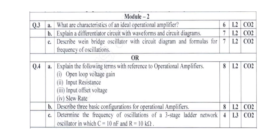The OR choice covers different op-amp parameters: open loop voltage gain, input resistance, input offset voltage, and slew rate — explaining all these parameters carries eight marks, with each parameter carrying two marks. Also describe the three basic configurations of operational amplifier. There is also a problem for finding the frequency of oscillation using a three-stage ladder network, given capacitor and resistor values.